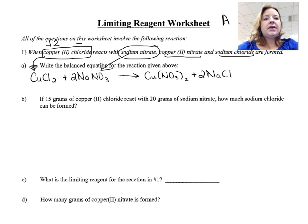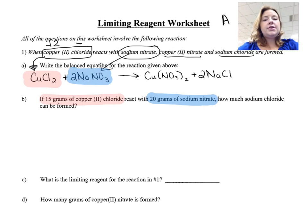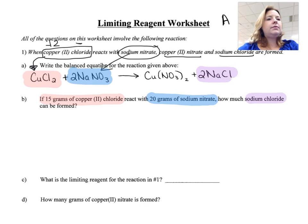Here's what we're given — I'm going to do some highlighting. We're given 15 grams of copper 2 chloride, and that's going to react with 20 grams of sodium nitrate. We want to find out how much sodium chloride is formed. You can see there are 3 items highlighted, which means I'm actually going to have to do 2 different calculations.